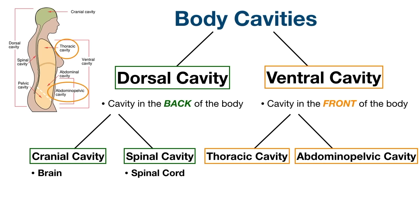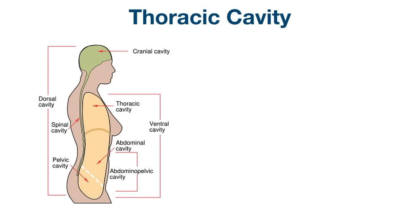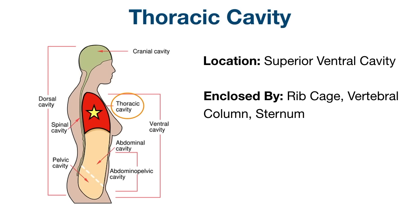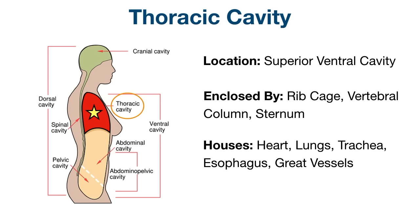The ventral cavity can also be subdivided into two main parts: the thoracic cavity and the abdominal pelvic cavity, which are separated by the diaphragm. The thoracic cavity is the cavity in the chest. It's the superior portion of the ventral cavity, above the diaphragm. The thoracic cavity is enclosed by the ribcage, vertebral column, and sternum. The main contents include the heart, lungs, trachea, esophagus, and great vessels. The thoracic cavity is also lined by membranes.